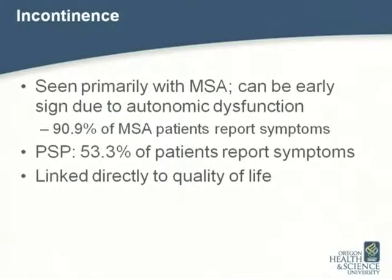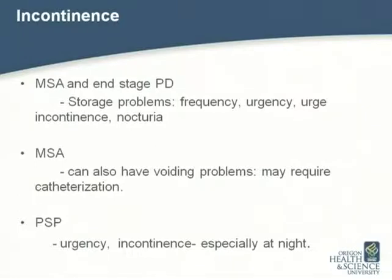When we first get an MSA patient, we focus on bladder and bowel issues — incontinence is a huge factor for them compared to our other clients, though you will see it in PSP and end-stage Parkinson's too. With overall MSA and end-stage PD, there are storage problems: frequency, urgency, urge incontinence, and nocturia. With MSA, there can also be voiding problems requiring catheterization. PSP patients tend to have more incontinence at nighttime.